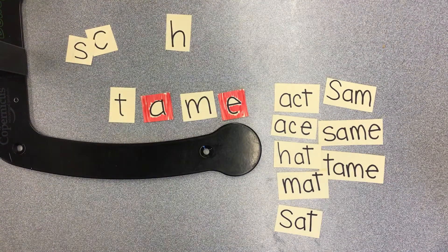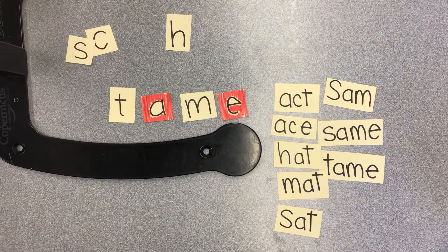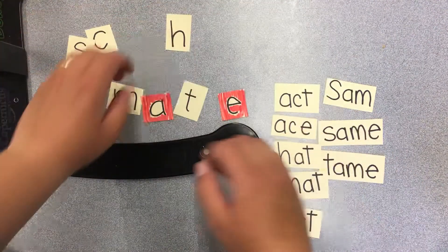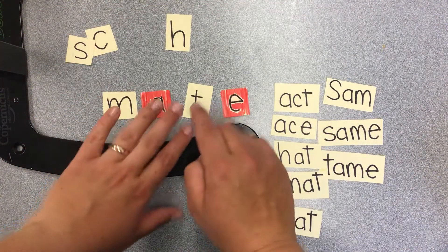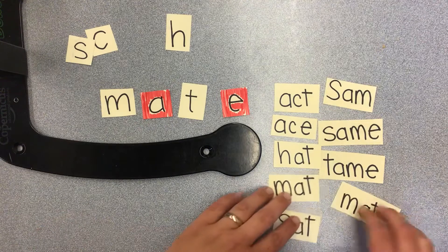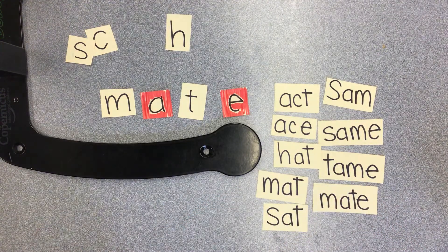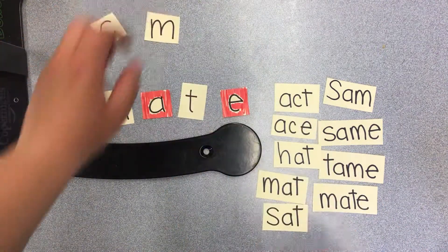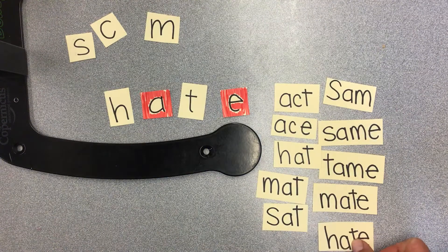You're going to keep these letters but change the order to make the word mate. Some penguins mate for life. The long A doesn't change — the E and the A stay there, we're just changing the consonants. Then change one letter to make the word hate. I hate pickles. It's an H now — hate.